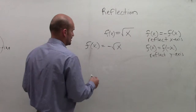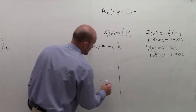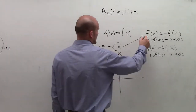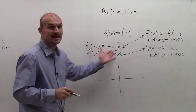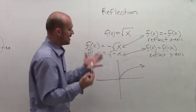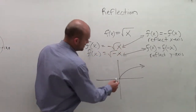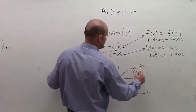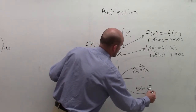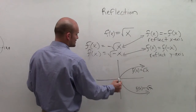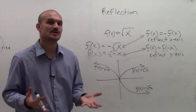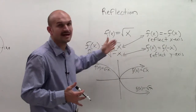Let's take a look at what these two graphs would look like. The graph of f(x) equals square root of x looks something like this. If I reflect that over the x-axis, I get f(x) equals negative square root of x. And if I reflect it about the y-axis, it would look something like this — that is f(x) equals square root of negative x. So it's important to understand whether we're multiplying by a negative inside or outside our function.